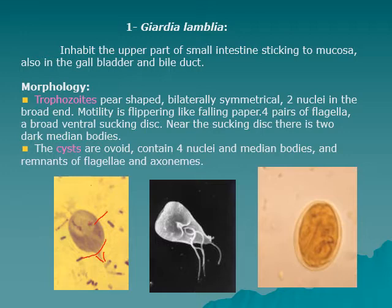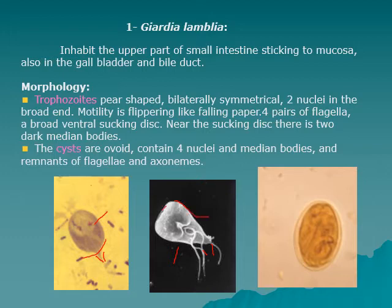In routine films we cannot see the flagella. Using the scanning electron microscope, we can see the flagella: the ventral pair, the posterior pair, another ventral pair, and the anterior pair of flagella. The anterior pair arises and passes around the sucking disc, while the other flagellum also passes anteriorly to exit at the front.